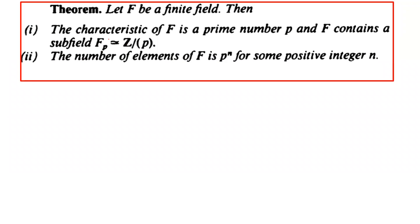fp is the notation for the prime field, which is isomorphic to Z/pZ. Secondly, we have to prove the number of elements of F is p raised to power n for some positive integer n. This is a very important result given in the second part, which we will discuss later. Firstly, we will do the proof of the first part.